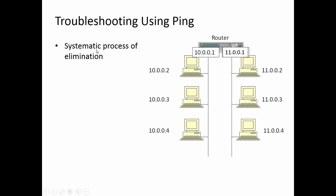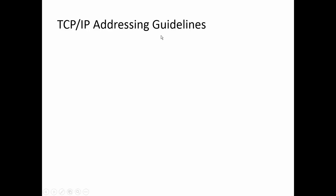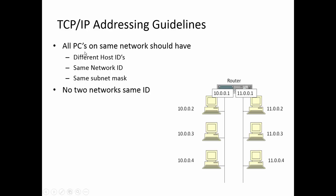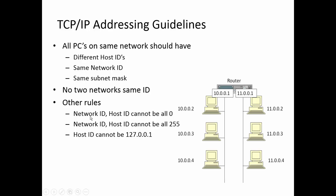Troubleshooting with ping allows us to employ a systematic process of elimination. TCP/IP addressing guidelines: all hosts on the same network should have different host IDs, the same network ID, and the same subnet mask, and no two networks should have the same network ID. Additional rules: the network ID should not be all zeros, and the host ID should not be all zeros. The network ID should not be all 255s, and the host ID should not be all 255s. You should not assign a host ID of 127.0.0.1, because that is reserved for the local loopback self-test.